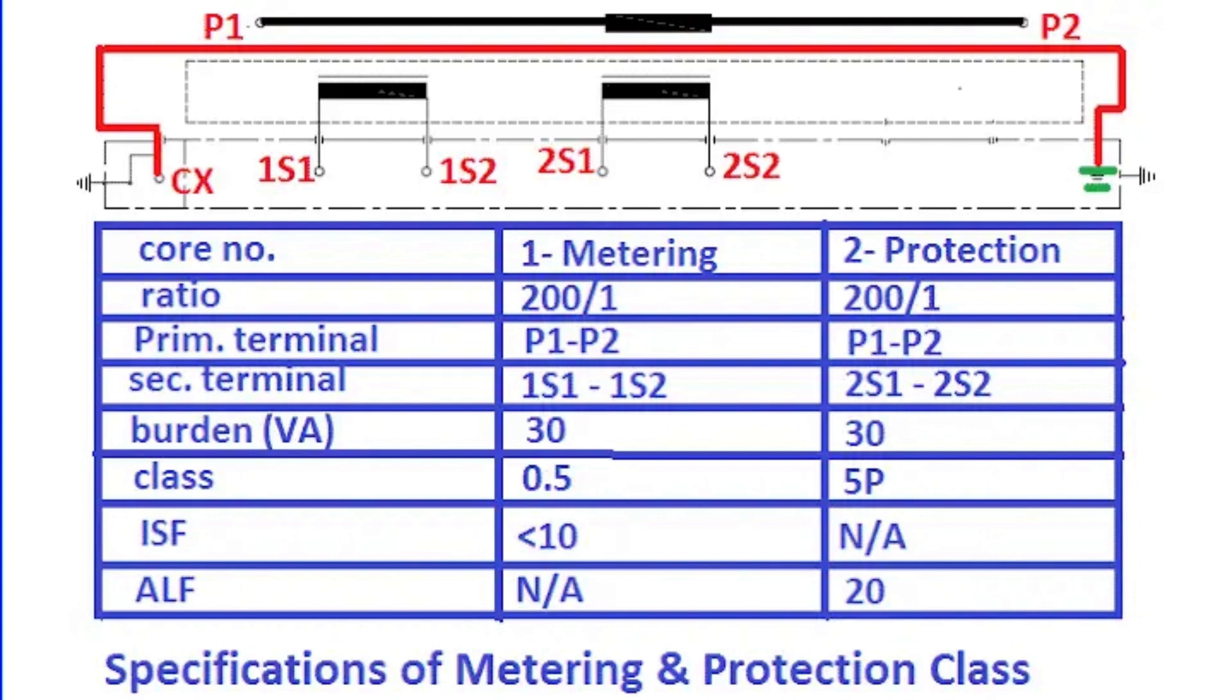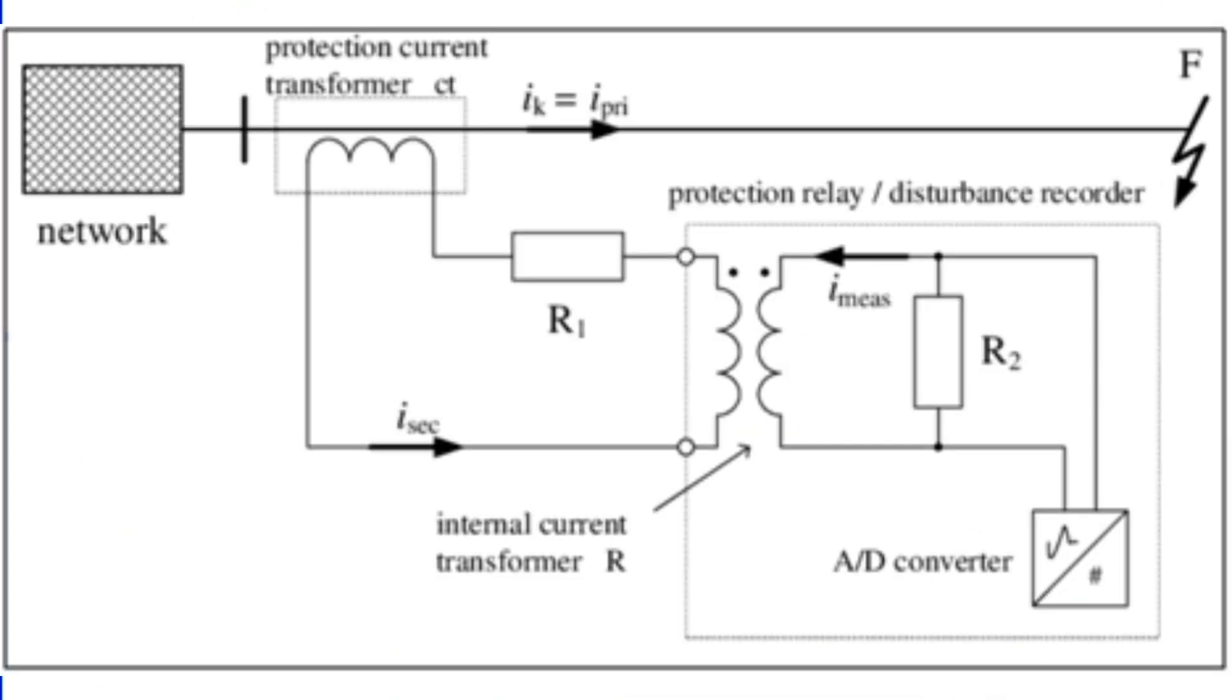Let's discuss why. Protection CTs are designed to measure fault currents that are 10 to 20 times the rated current. Their primary job is to send accurate inputs to relays during fault conditions. The relay then decides whether to send a trip signal to isolate the faulty section.